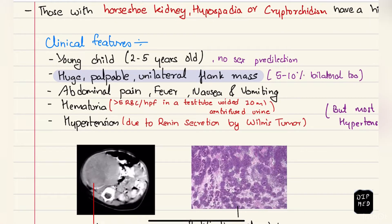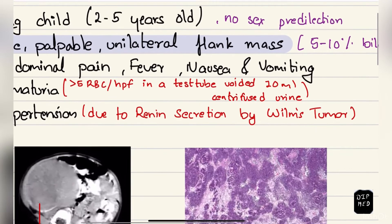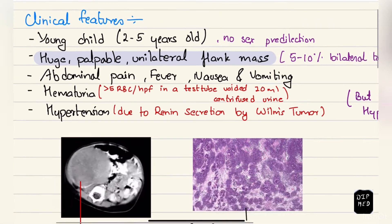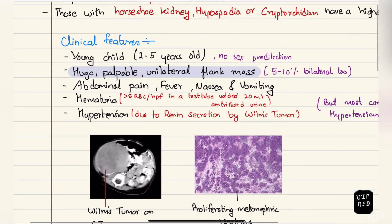These patients can also present with hematuria, defined as more than five RBCs per high power field in a tested voided 10 ml of centrifuged urine.